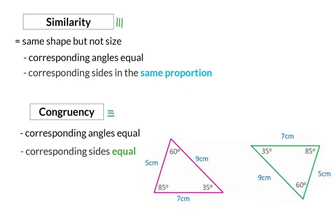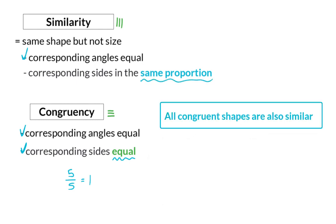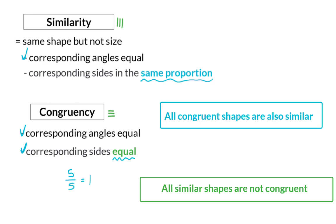In this picture we have congruent triangles because all the corresponding angles are definitely equal and the corresponding sides are the same length. It is important to realize that when sides are equal, the ratio, for example, will be 5 over 5 and will always be simplified to be 1, which means they will then also be in the same proportion. This means that all congruent shapes are also similar because they are exactly the same, but all similar shapes are not necessarily congruent.